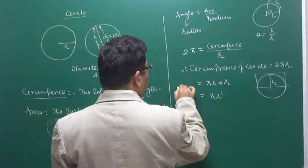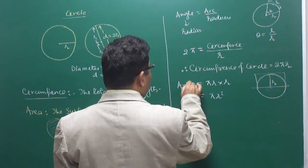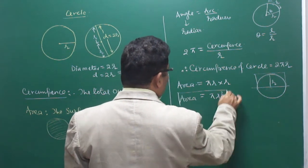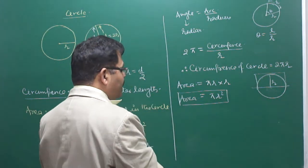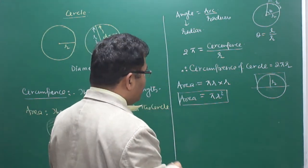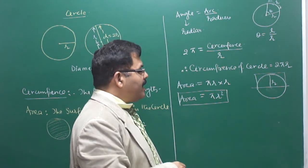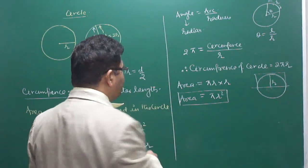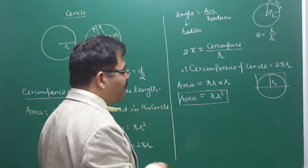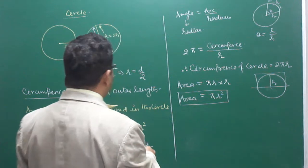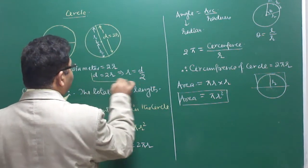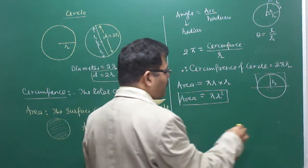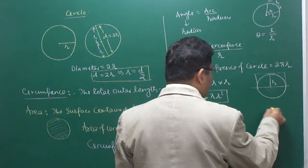To summarize: area of a circle is πr², circumference is 2πr, and diameter equals twice the radius. These are the key formulas you must keep in mind.